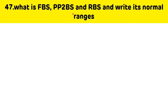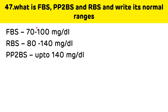What is FBS, PP2BS, and RBS, and what are their normal ranges? FBS is fasting blood sugar, requiring 10 to 12 hours of fasting. PP2BS is postprandial blood sugar, collected 2 hours after a meal. RBS is random blood sugar, which can be collected at any time. Normal ranges: FBS is 70 to 100 mg/dL, RBS is 80 to 140 mg/dL, and PP2BS is up to 140 mg/dL.